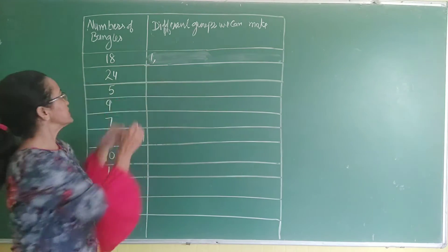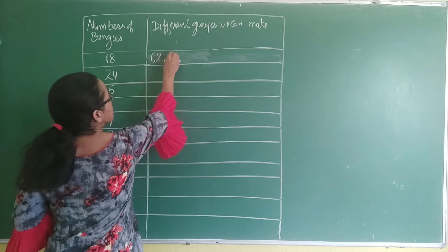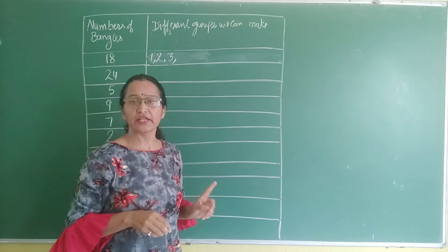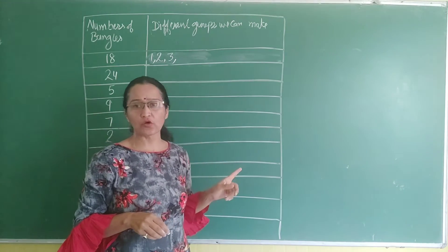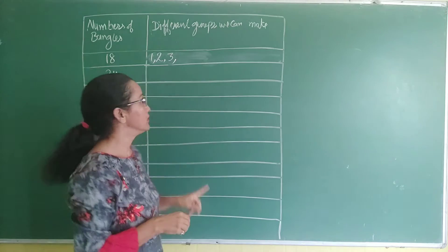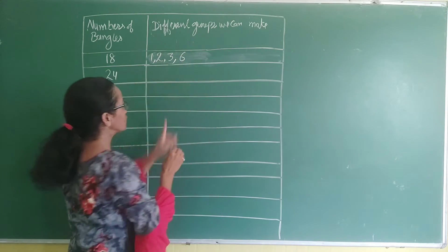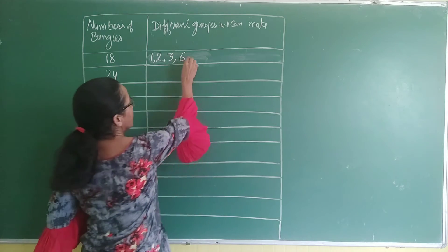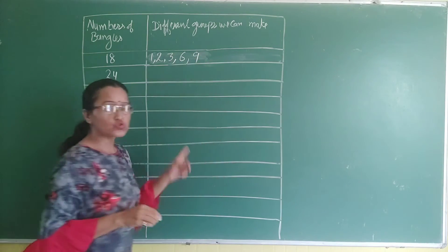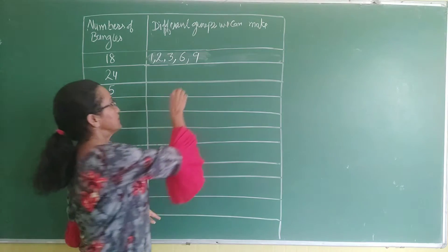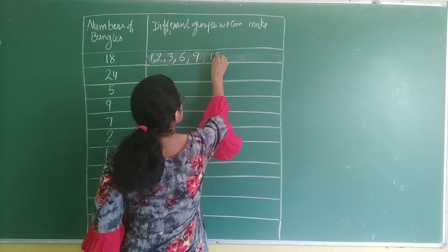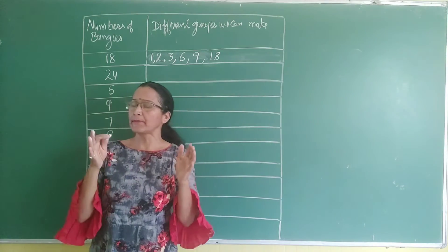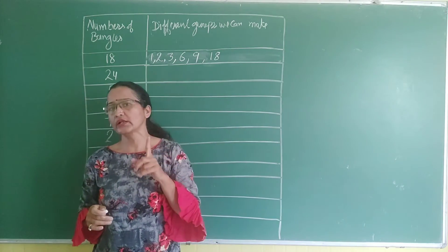So next, 2 is available. 3 is available. 4 is not available. 5 is not available. 6 is available. 9 is available. And 18 is available. So for 18 bangles, you can make one group of 18.